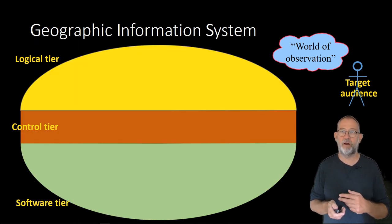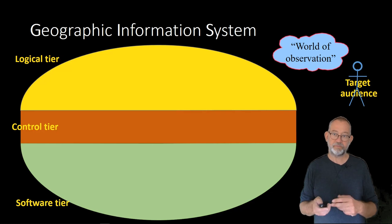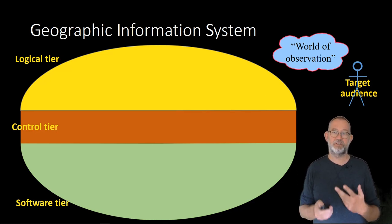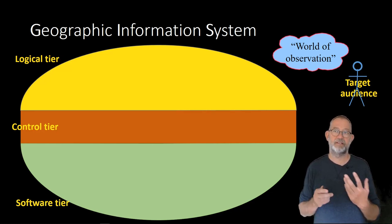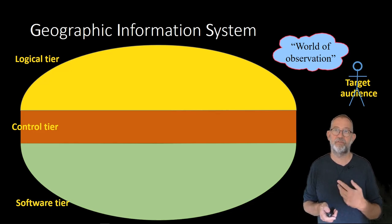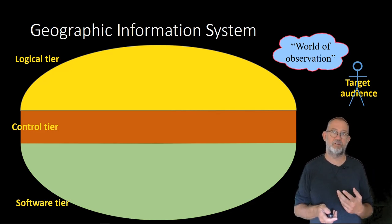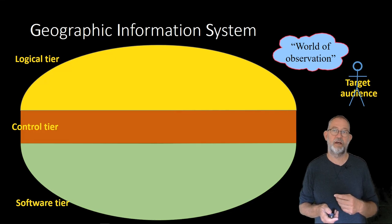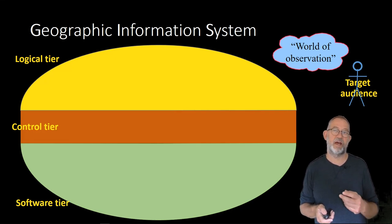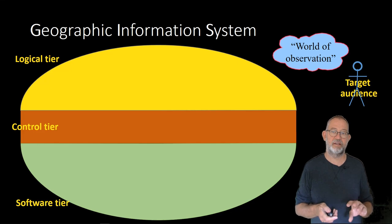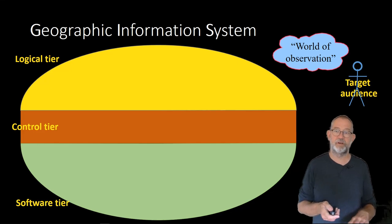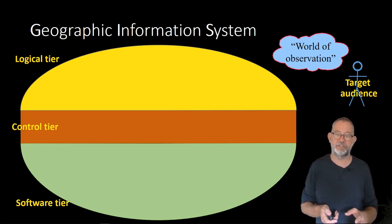If we try and visualize a geographic information system as a big burger, we have a top bun which is the logical tier, in the middle bun or the meat we have our control tier, and at the bottom bun we have the software tier.